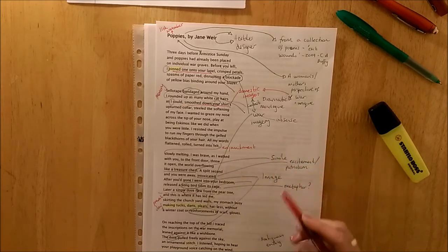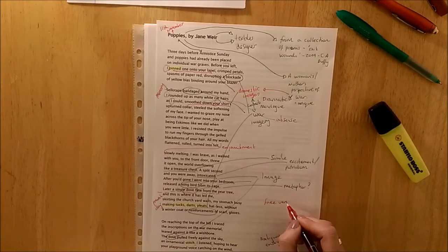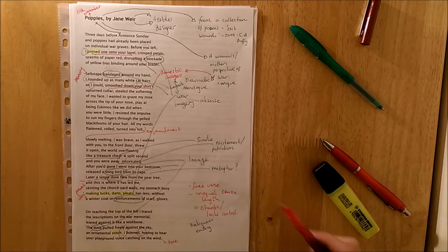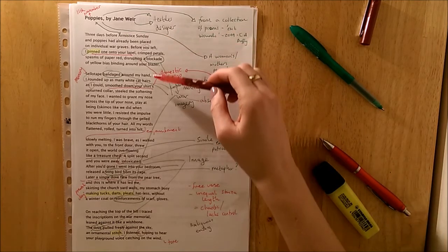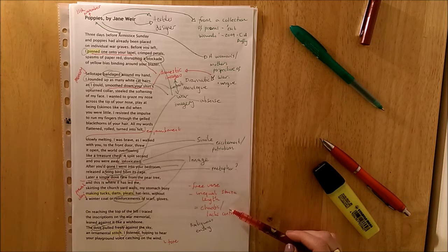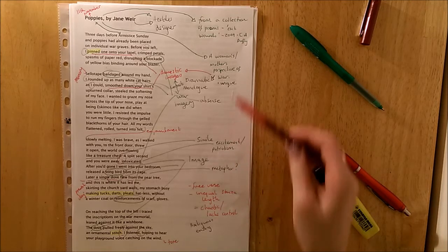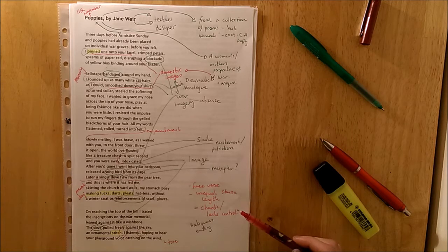Then as you will see from the ends of the lines, this poem is written in free verse. No regular rhyme scheme. So the stanzas are of unequal length. Some short. Some long. Some short again. And this really reflects a chaotic nature. A lack of control in the poem. And this chaos could represent the mother's perspective. Her mental state since losing her son to war.